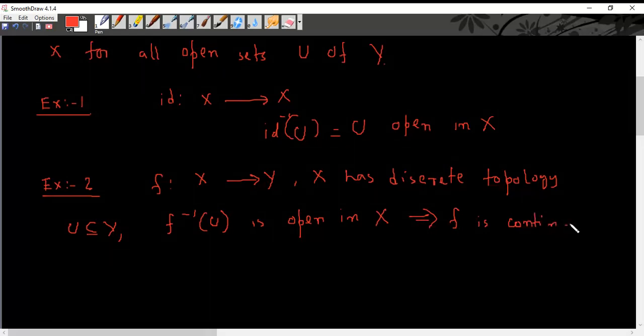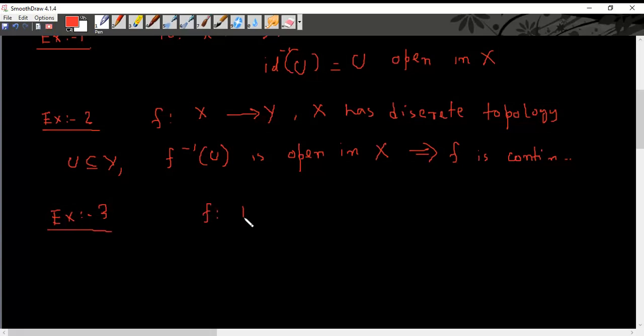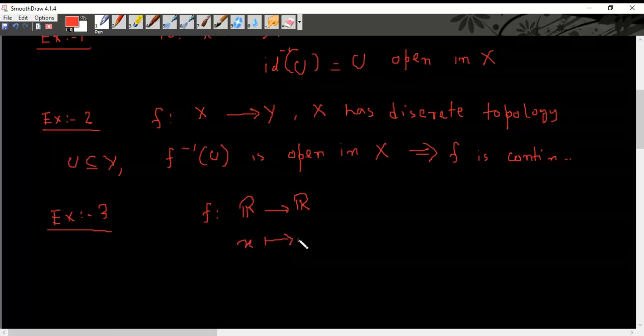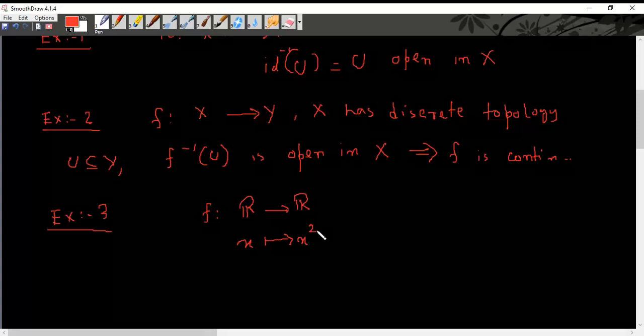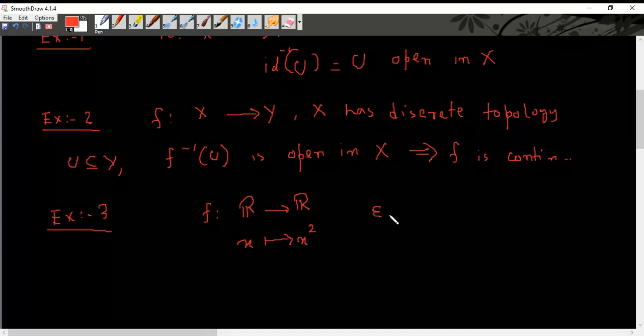Now we have very familiar examples which we saw many times in calculus. For example, f from R to R defined by x going to x square. How do we show that this is a continuous function? In our calculus we show it by epsilon delta definition.